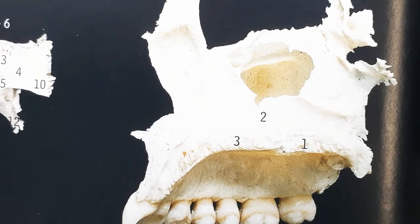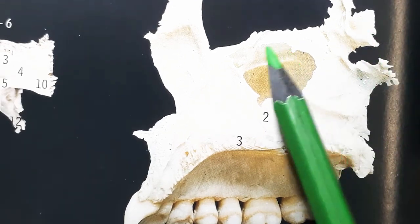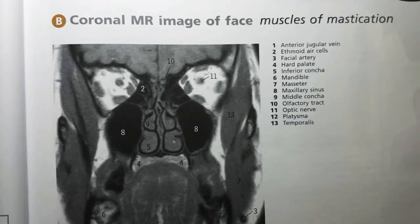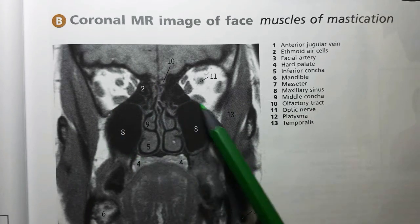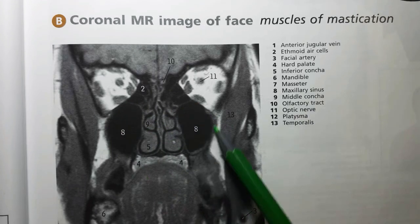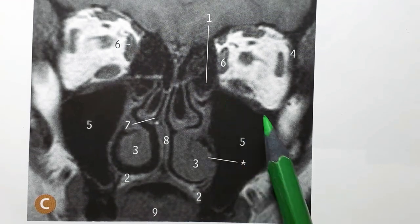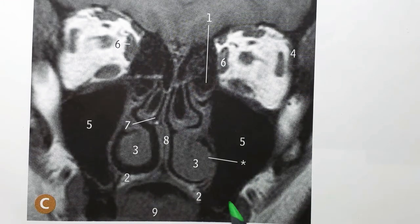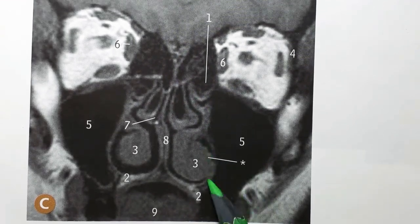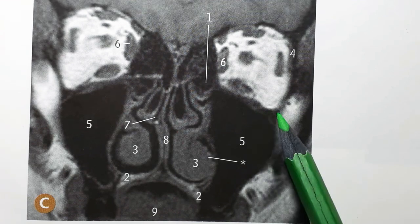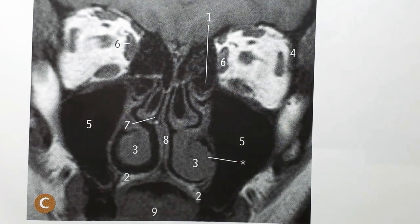The maxillary sinus is the largest of all sinuses and is pyramidal in shape. The image of the maxilla shows this cavity clearly, and in a coronal image of the face you can see the maxillary sinus alongside the ethmoidal air cells. Its relations are: roof — the floor of the orbit; floor — the alveolar process of the maxilla; base — the lateral wall of the nose; apex — extending to the zygomatic process; anterior wall — the anterior surface of the body of the maxilla; and posterior wall — the infratemporal surface of the maxilla.